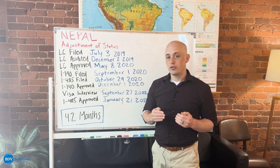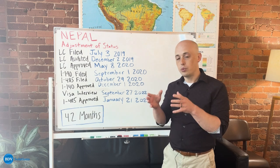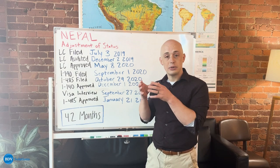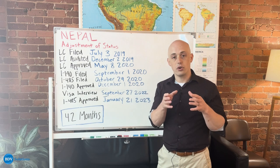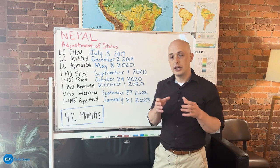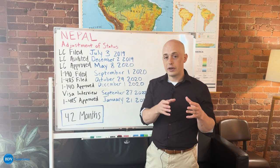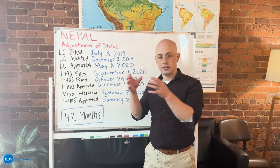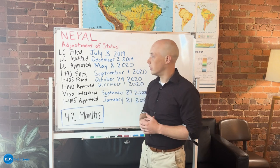Adjustment of status is different from consular processing in that when you do adjustment of status, you actually begin your application process from within the United States. You come into the U.S. with a valid status, and then you adjust that status to applying for your green card.